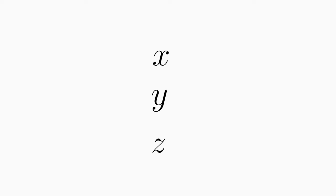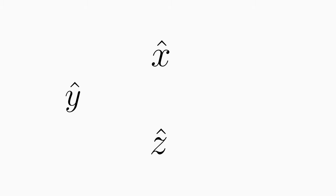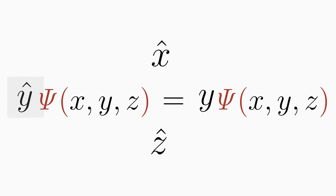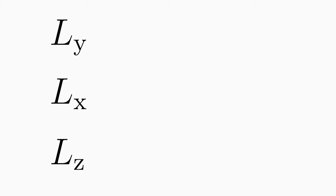What about the positions x, y, and z? The positions are now also operators with hats. Applied to a position-dependent wave function ψ, they return the wave function scaled by the position, so the operator is equal to the position itself. To transform the classical angular momentum components lx, ly, and lz into quantum mechanical angular momentum components, we need to convert them into operators.